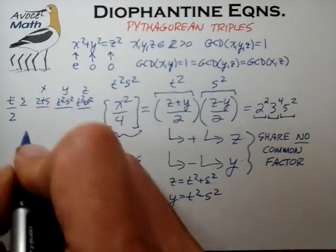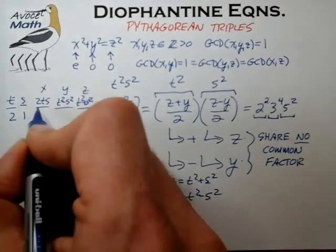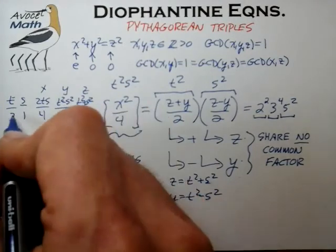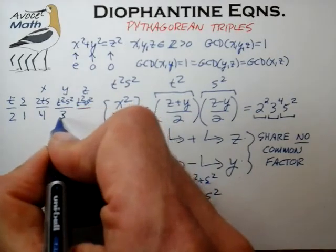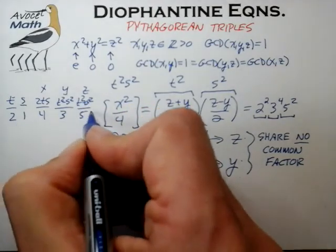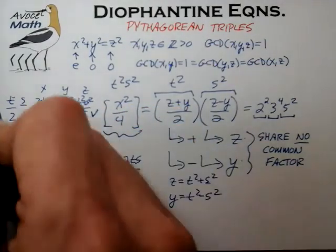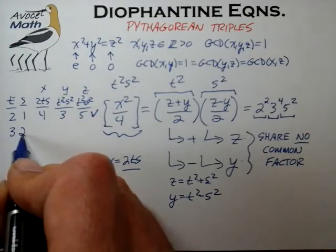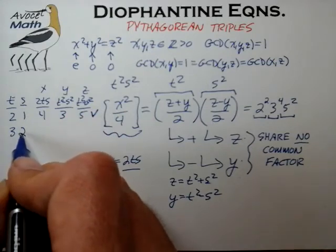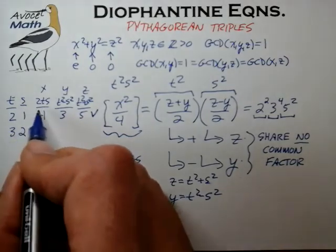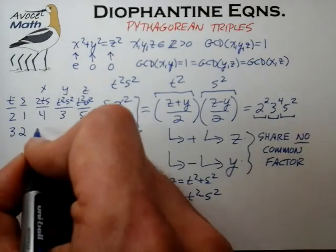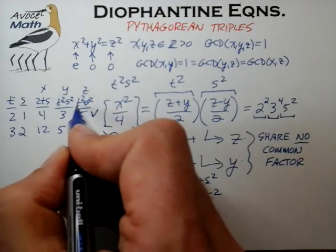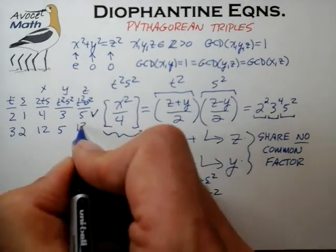For t = 2, s = 1: x = 2×2×1 = 4, y = 4−1 = 3, z = 4+1 = 5. That's a Pythagorean triple. For t = 3, s = 2: they're relatively prime and of opposite parity. x = 2×3×2 = 12, y = 9−4 = 5, z = 9+4 = 13. That too is a Pythagorean triple. The equation seems to be working.